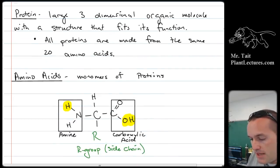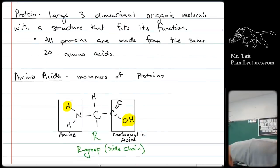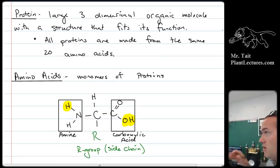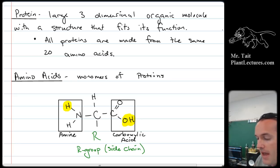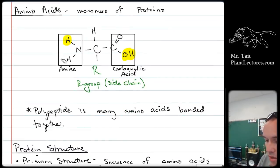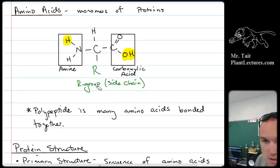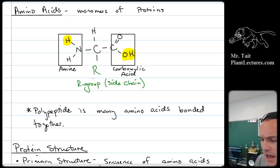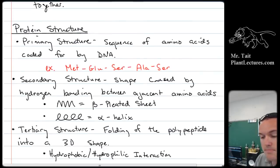Then we want to talk about proteins. We said proteins are all made of these 20 amino acids. These are three-dimensional organic molecules that act as the machinery of the cell. The 20 different amino acids are all variations of this structure: there's an amine group, a carboxylic acid group, and then an R group. There are 20 different R groups, and those lead to the different properties of the amino acids. Some of them are hydrophobic, some of them are hydrophilic, and that is going to cause the different shapes of the proteins.